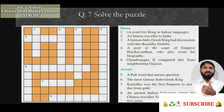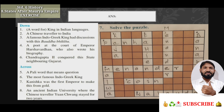Question number seven: Solve the puzzle. A puzzle is given and you have to write the words according to the puzzle. For your convenience I have done one. Down clues — one: a word for king in Indian language, that is Raja. Two: a Chinese traveler to India — Fahian. Three: a famous Indo-Greek king who had discussion with a Buddhist monk — Menander. Four: a poet at the court of Emperor Harshavardhana who also wrote his biography — the answer is Banabhatta.